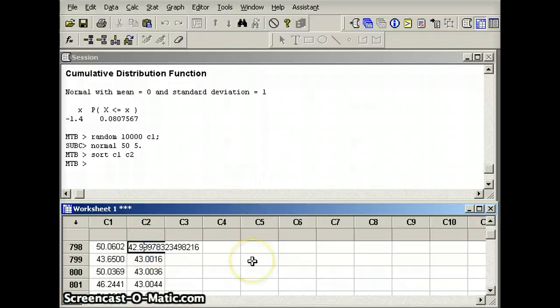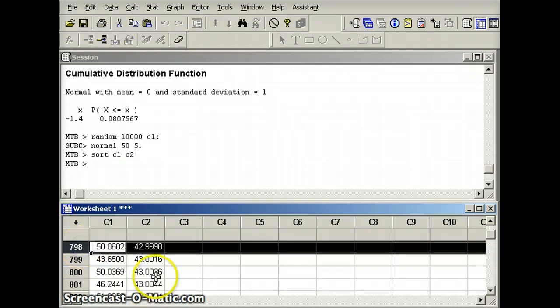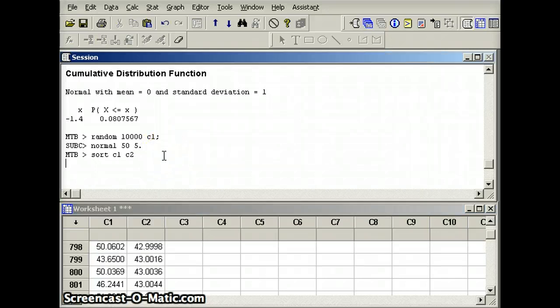Notice nothing is exactly 43. In fact, this is 42.99978323498216. You're never going to get exactly 43 because it is a continuous random variable. So I have 798 numbers here that are under 43. But I can use that now to get my approximate probability. The probability that x is less than 43 is approximately 798 out of 10,000, which of course equals 0.0798. Very close to 0.08. Very close to what we would expect based on our theoretical probability.